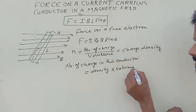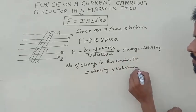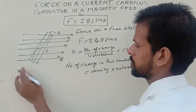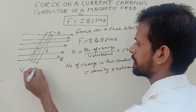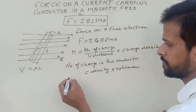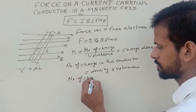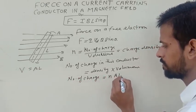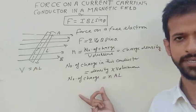So the volume of this conductor is area times length. So number of charge is equal to N times A times L. So this is the number of charge.